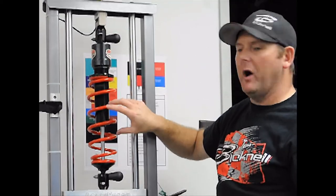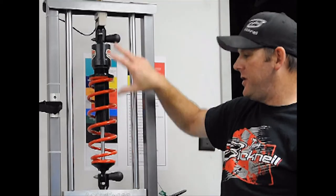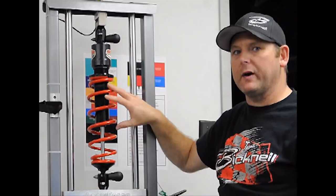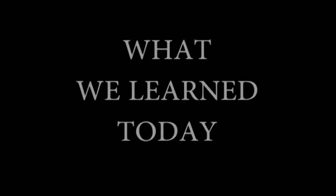Because you do have gas pressure that is pushing down on the load cell as well. So this spring might be 150 pounds, but this total unit of the shock and the spring itself is 160 on the spring smasher.